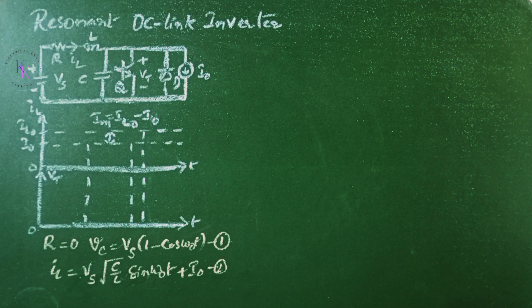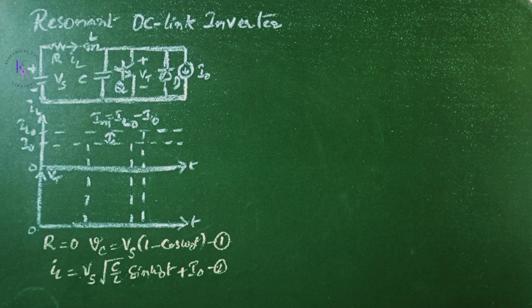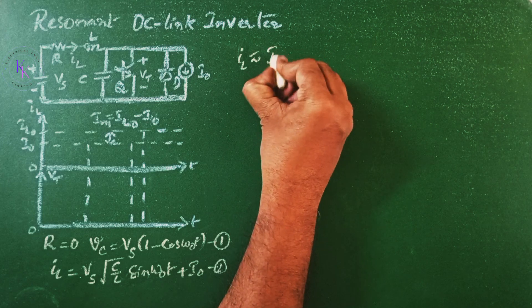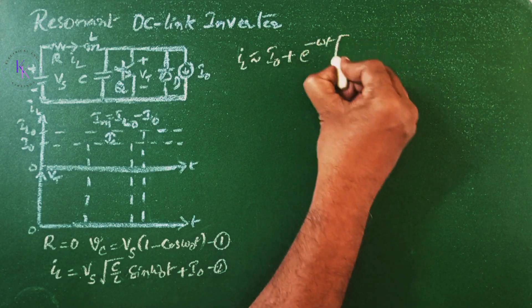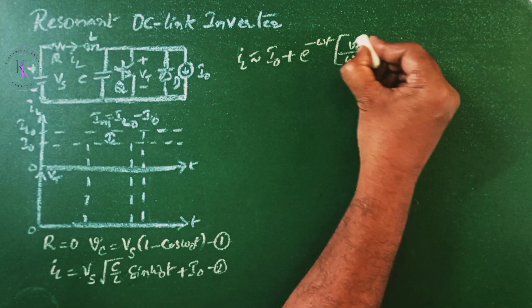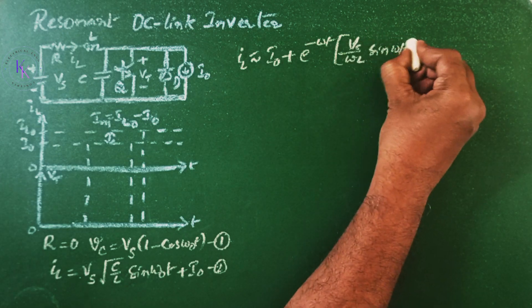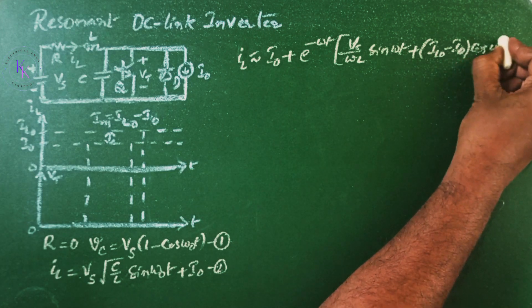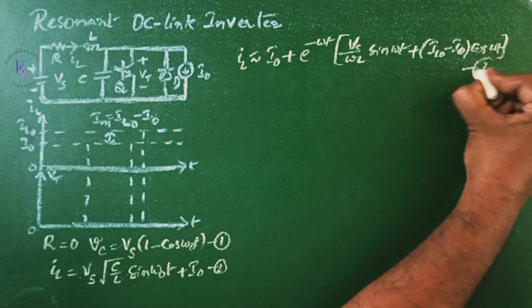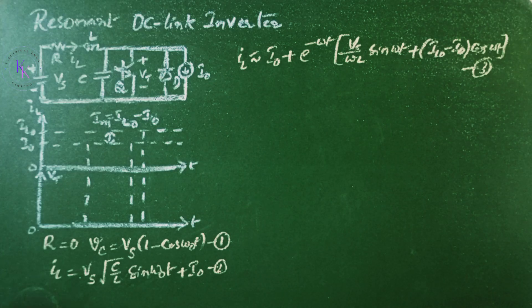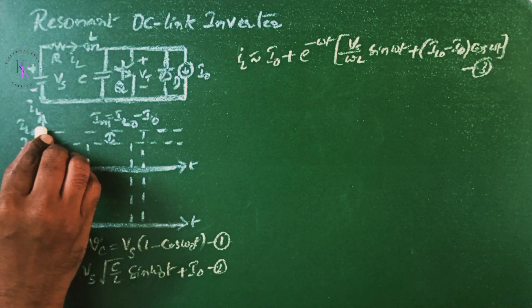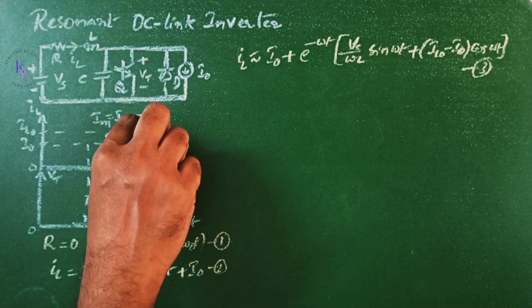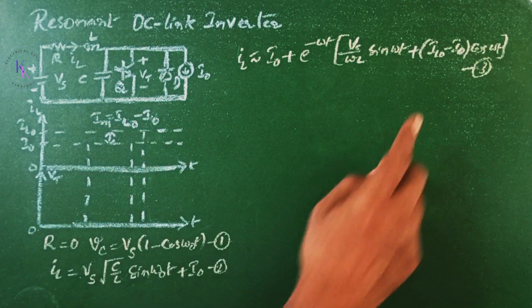The value of R is small and the circuit is underdamped. Under these conditions, IL is given by approximately equal to I0 plus E power minus omega T of Vs by omega L sin omega T plus I0 minus I0 cos omega T. Let this be equation number 3, where IL0 is the initial inductor current, and I0 is the inverter current. And the difference between these two is Im, which is nothing but IL0 minus I0 here.